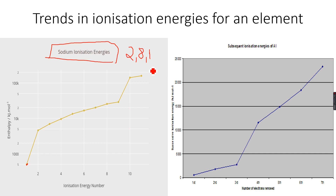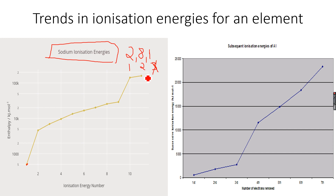After removing this one electron, the first shell, second shell, and third shell are evident. When we remove this one electron, we have eliminated the third shell and come to the second shell. The second shell is much closer to the nucleus compared to the third shell. That's why there is a steep increase in ionization energy — because the atomic radius has decreased, as you have eliminated that outermost shell and moved to a lower shell.